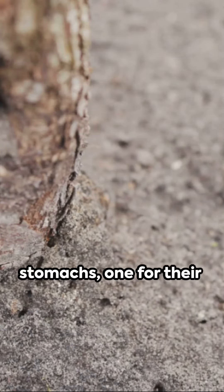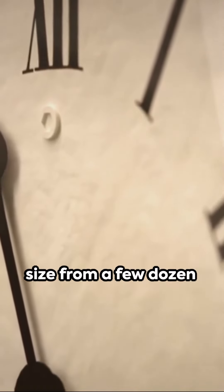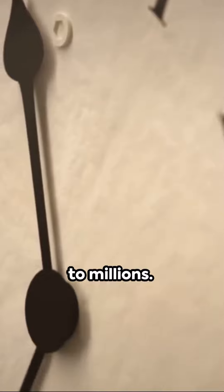Ants have two stomachs, one for their own food and one to share food with other ants. Ant colonies range in size from a few dozen to millions.